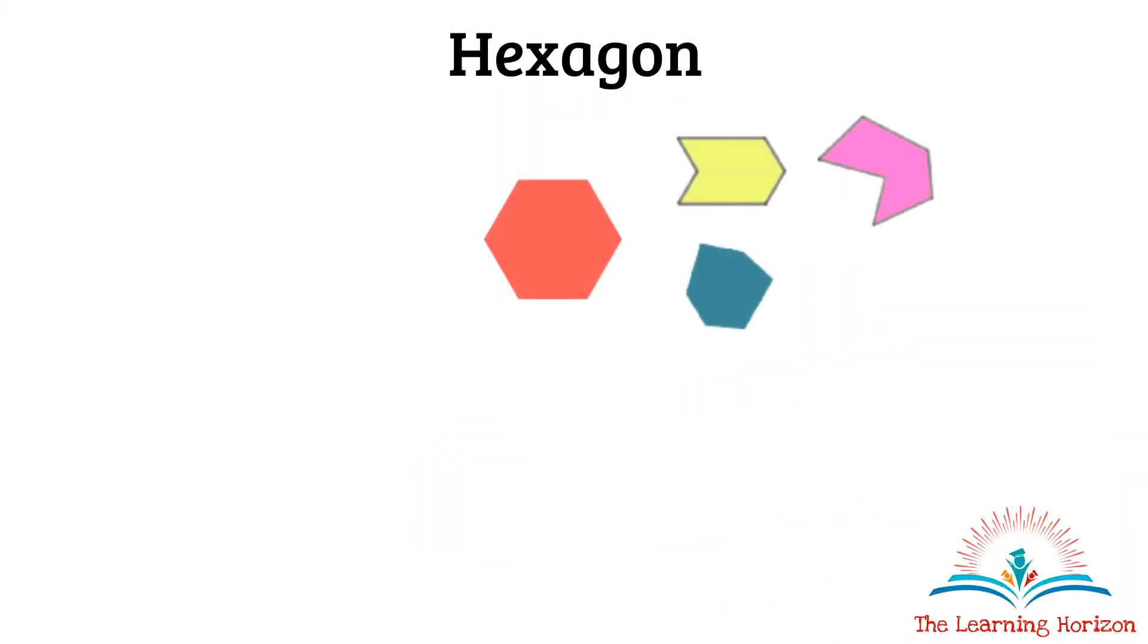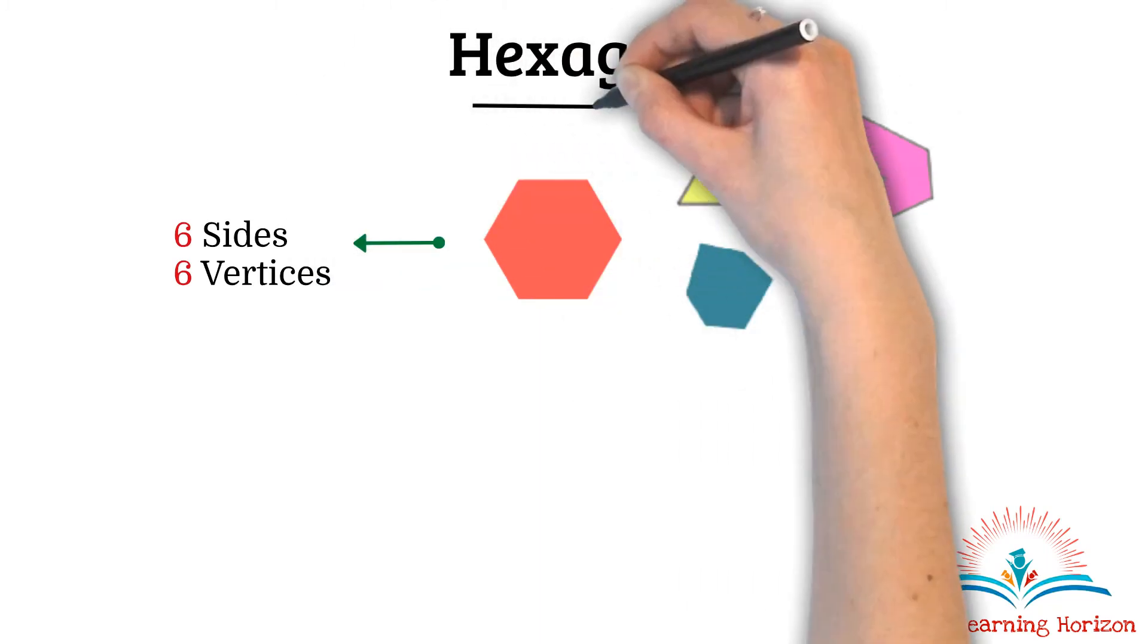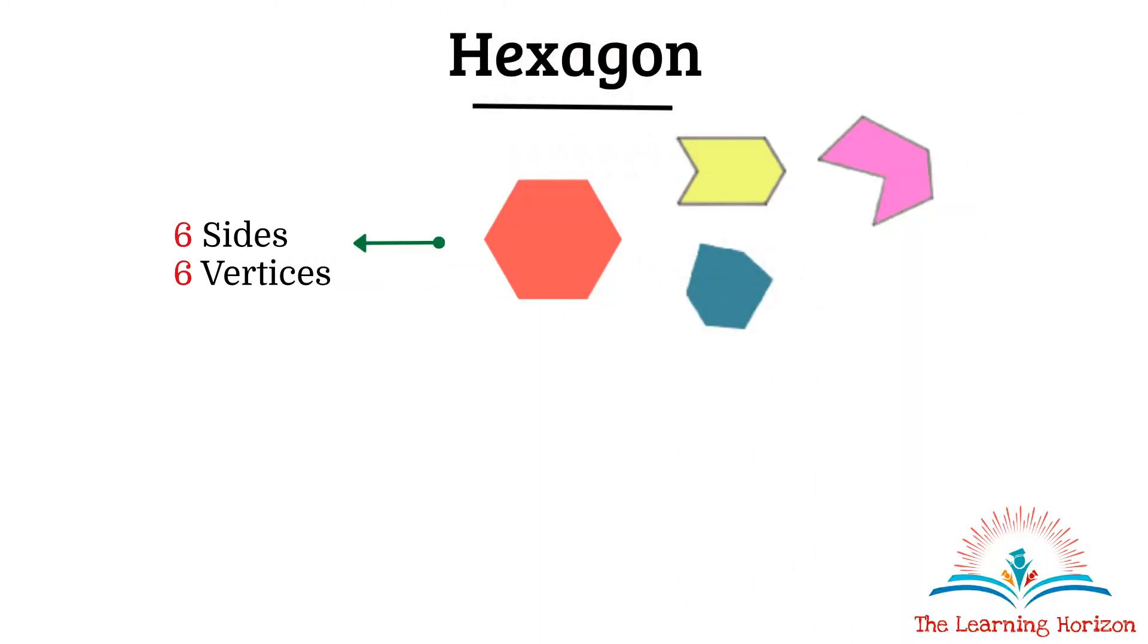Hexagon. A closed shape with six sides and six vertices is called a hexagon. Some examples are as shown.